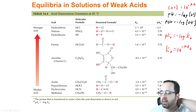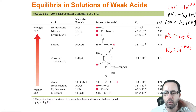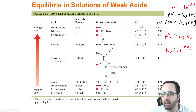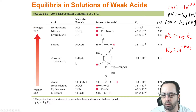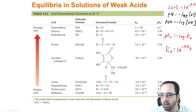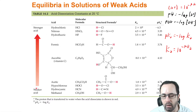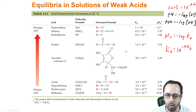Sometimes you'll be given Ka, sometimes you'll be given pKa, and you'll have to switch between them. A larger Ka indicates a stronger acid; smaller Ka, weaker acid. pKa goes opposite to that — the larger the pKa, the weaker the acid; the smaller the pKa, the stronger the acid.